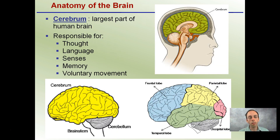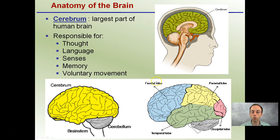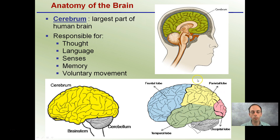The cerebrum is also the largest part of the human brain. While it may be divided into different regions — such as the frontal lobe, the temporal lobe, the parietal lobe, and the occipital lobe — all these together make up the cerebrum. The cerebrum and all these different lobes are responsible for thought, language, senses, memory, and voluntary movement.